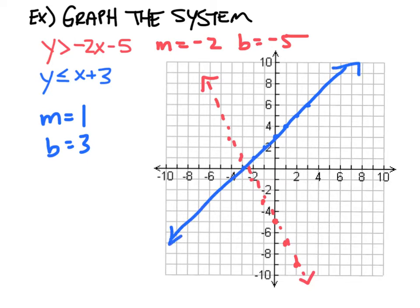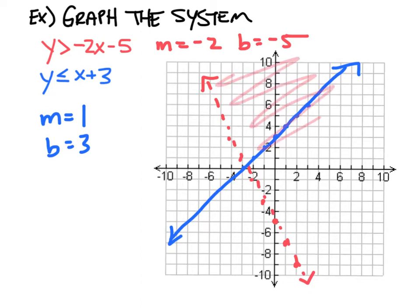Now it's time to look at the shading. Because this is y is greater than, we need to remember that we shade above the line. That's simply because this inequality is telling me all of the y's that are greater than this line — all of these y values above the line will work. They're all solutions. So I'm going to shade above this line.